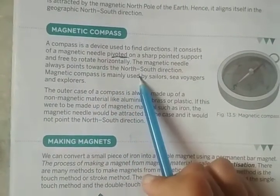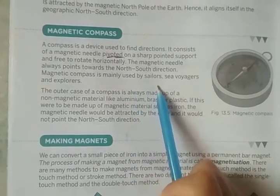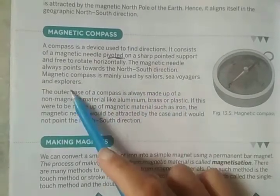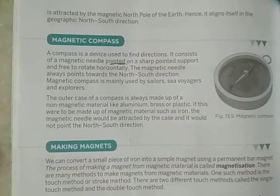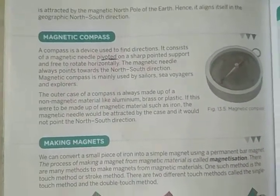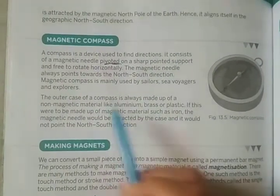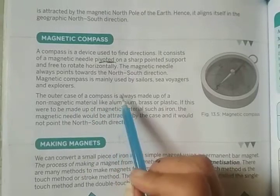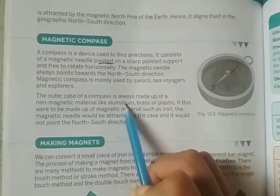Magnetic compass is mainly used by sailors, sea voyagers, and explorers, so that they do not go off in the wrong direction. That is why they use a magnetic compass. The outer case of a compass is always made up of a non-magnetic material like aluminum or brass.